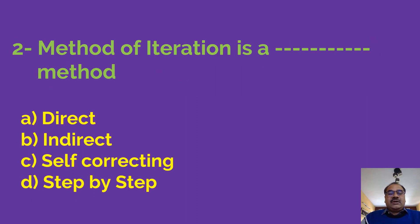The second question is: method of iteration is. You have to fill in the blank here out of these choices. So this method of iteration is a direct method or indirect method or self-correcting method or step by step method.